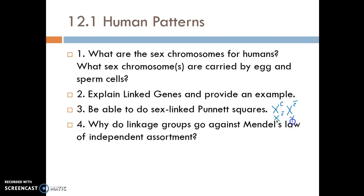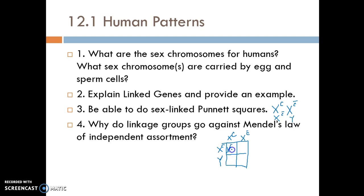Being able to do the Punnett square and also tell what our chances are of having an offspring with a certain trait. So this would be our Punnett square: X big C, X little c on the female side, and X little c and Y on the male side. We pull the information in just like we've done with all the other Punnett squares. In this case, we have a heterozygous female, a colorblind female, a normal vision male, and a colorblind male.